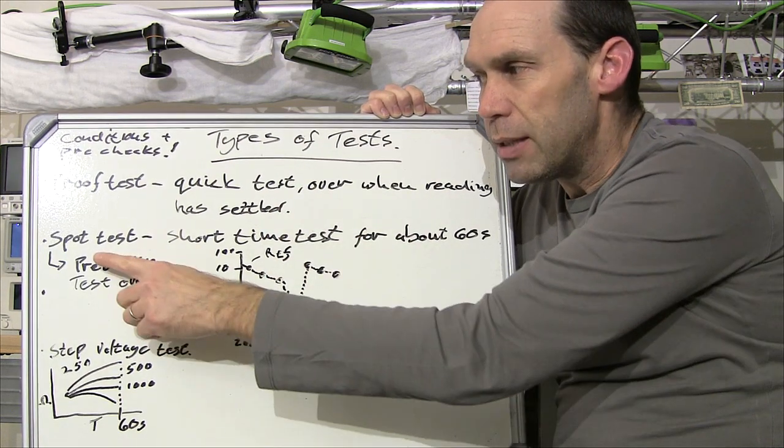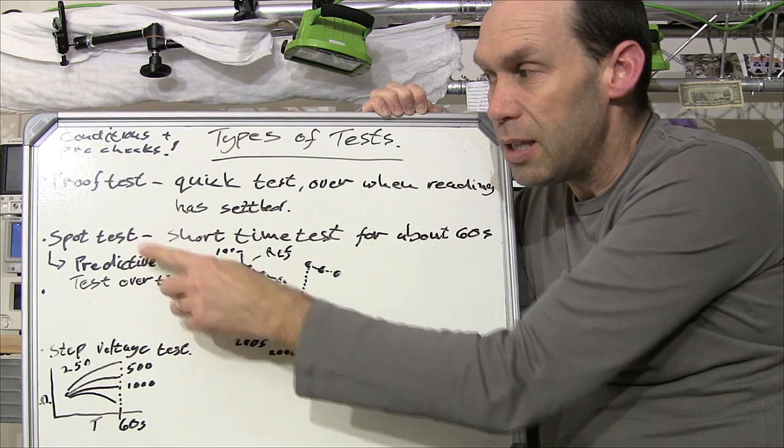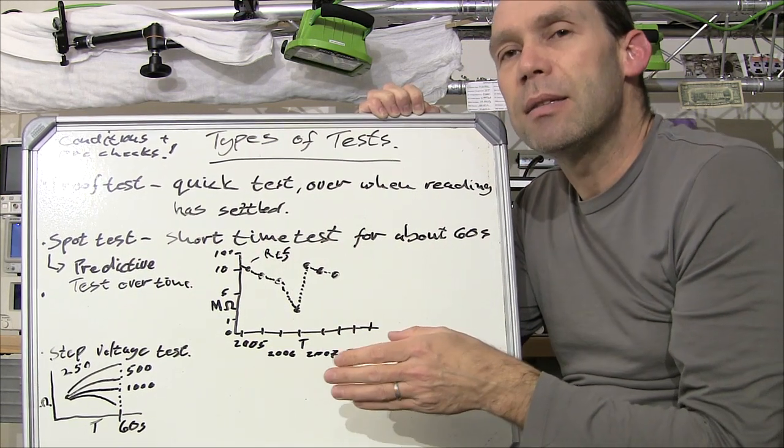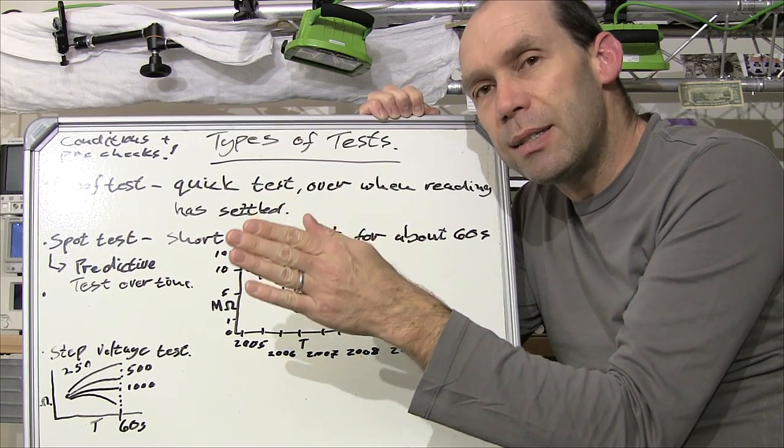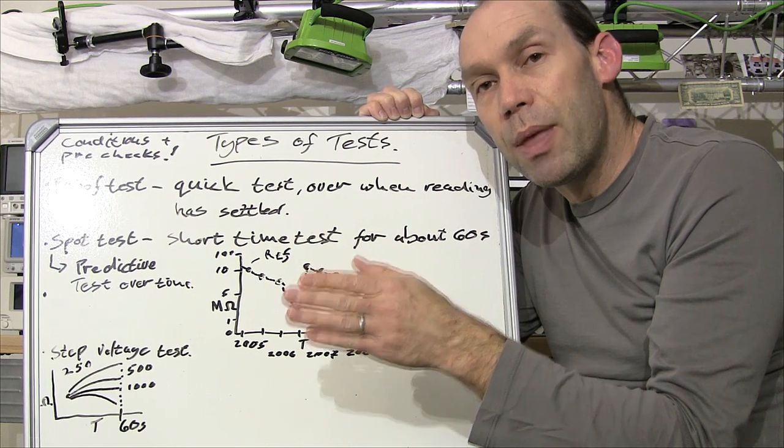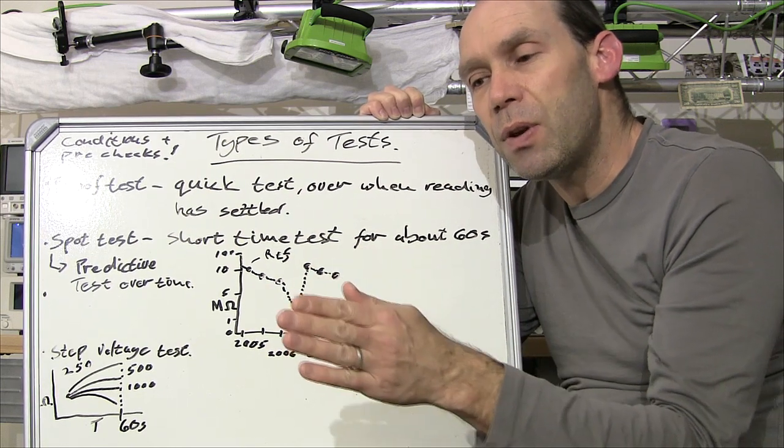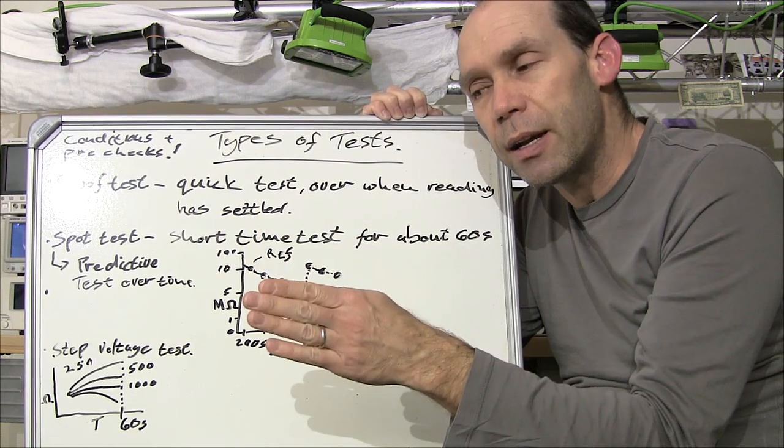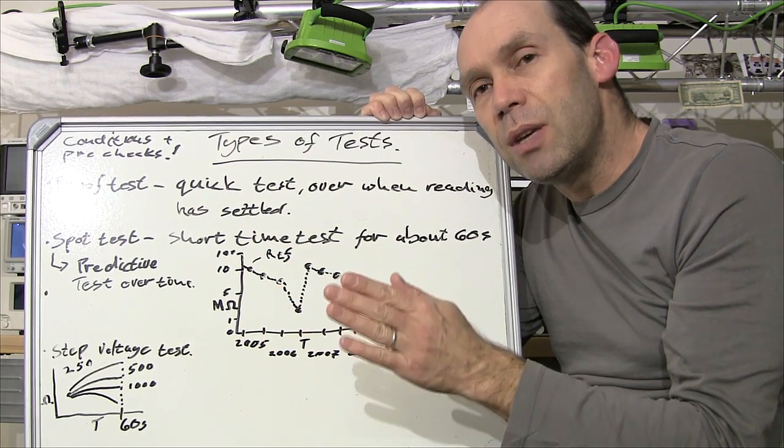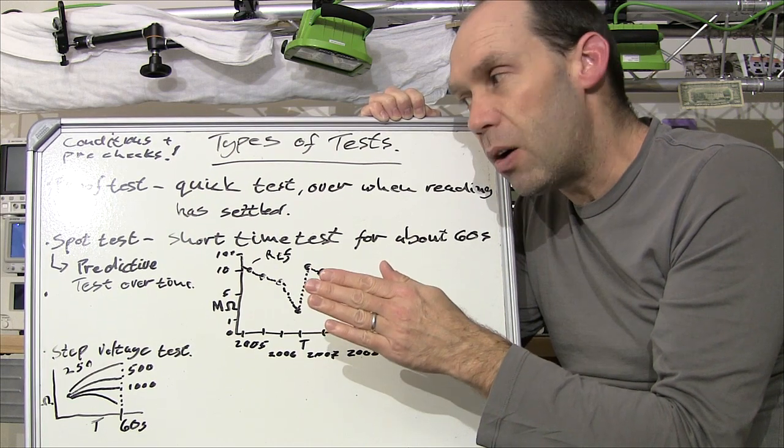So then you want to do something called a spot test. A spot test is a short test for about 60 seconds. So as opposed to just waiting until the reading is steady, the spot test you wait a certain amount of time, that being 60 seconds. So even if your reading is steady after 15 seconds you sit and wait with the voltage still applied to see if you're going to get any changes in the actual reading itself.